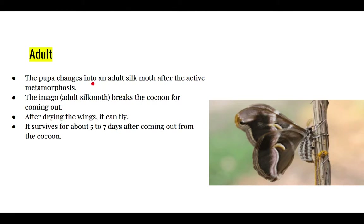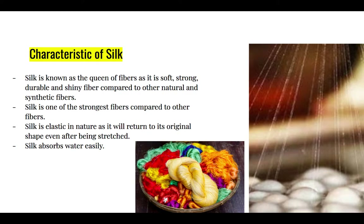After some time, the pupa changes into an adult silk moth. The adult silk moth breaks the wall of the cocoon and emerges out; the young adult that comes out is called an imago. After emerging, it dries its wings and then starts flying. After emerging, it survives for 5 to 7 days, after which they start mating. In this way the life cycle is completed.